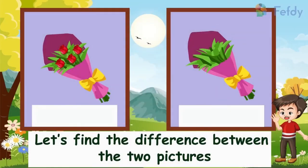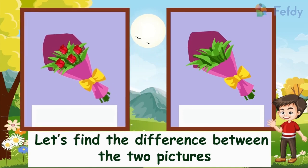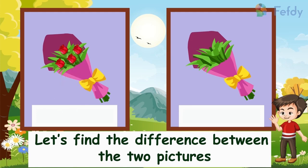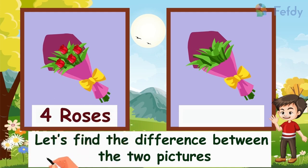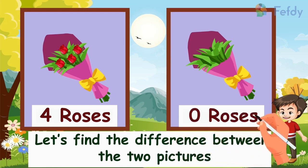Let's find the difference between the two pictures. Let's count the number of roses in the bouquet. One, two, three, four. There are four roses in the bouquet. Four roses. Then look at this picture. Zero roses.